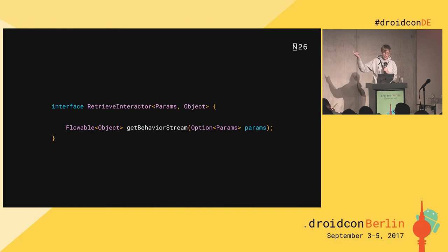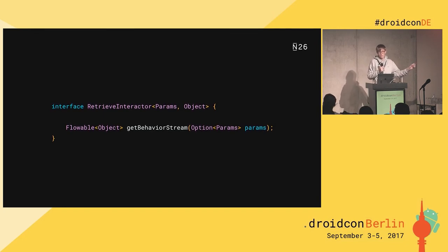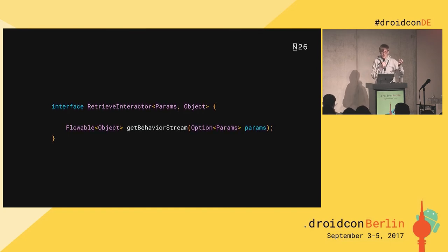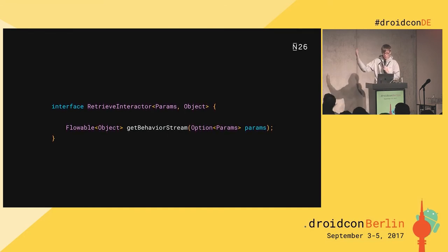This is how the interface for the retrieve interactor looks. It's similar to the typical use case in clean architecture, with the difference that here we have a getBehaviorStream method that returns the Flowable. The idea is not that you execute the use case — you take the stream from the repository, combine it with other things, make decisions, and continue the stream up to the presentation layer.